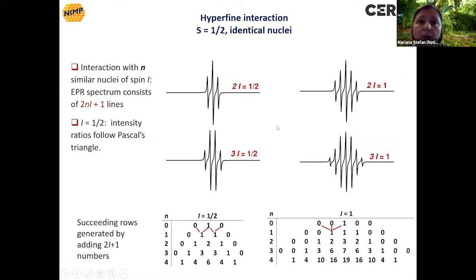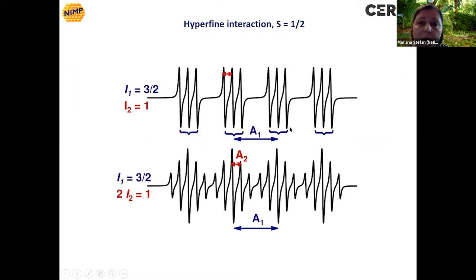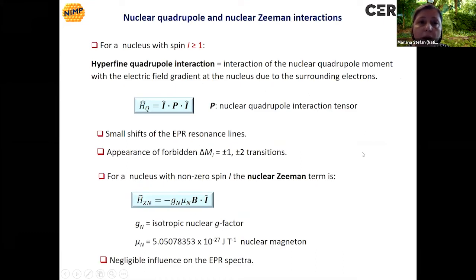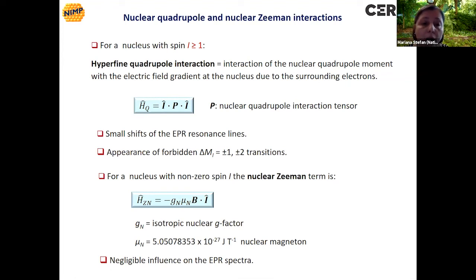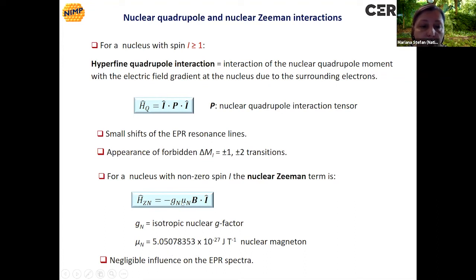The interaction with more than one nucleus will be discussed in the practical session. There are other interactions between the electron spin and nuclear spin. For nuclear spins larger than one-half, there is a hyperfine quadrupole interaction, which induces small shifts of EPR resonance lines and the appearance of forbidden transitions with delta mI equals plus or minus one or plus or minus two. There is also the nuclear Zeeman interaction for EPR, where Gn is taken as isotropic, but it has a very small, almost negligible influence on the EPR spectrum.